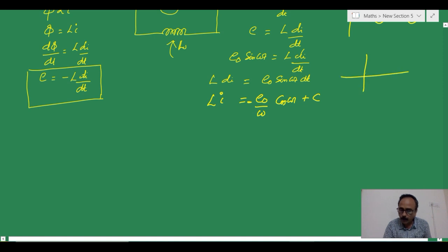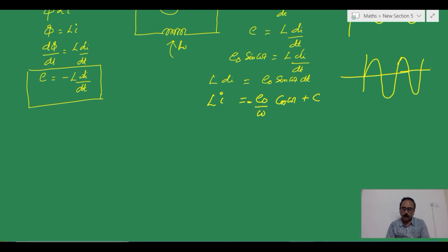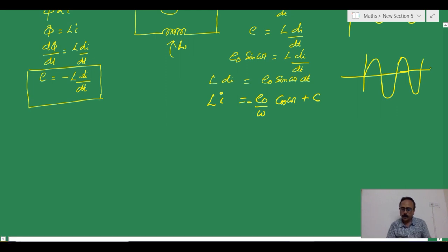When we talk about alternating current, it will be changing its direction as well as its magnitude. So c must be a current term, and since c is constant, no current term can be constant in alternating current. Therefore the value of c is zero, and the constant can be conveniently taken out.